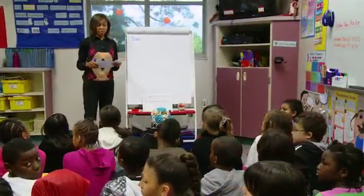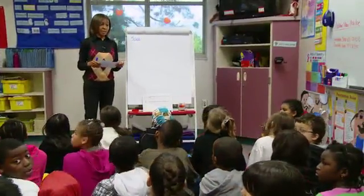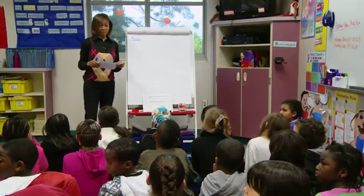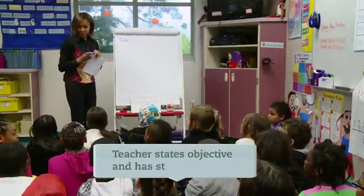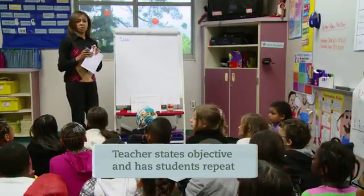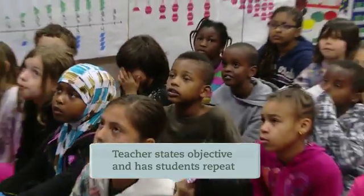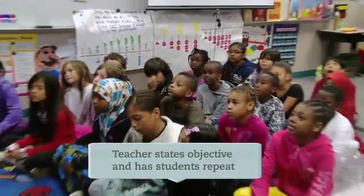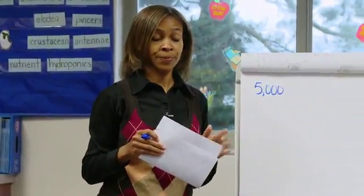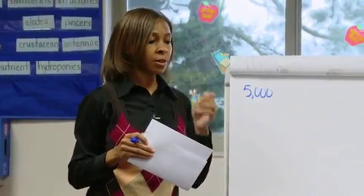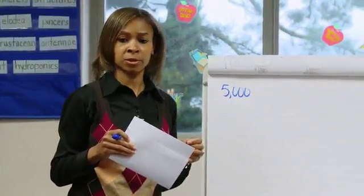We're going to do a coral count counting by two hundreds today. Big number. Can you repeat what I just said, Jason? We're going to do a coral count counting by two hundreds. Good job. What are we counting by? Two hundreds. And we're going to start at the number five thousand, counting by two hundreds. And when we do that, we're going to also look for patterns and numbers.